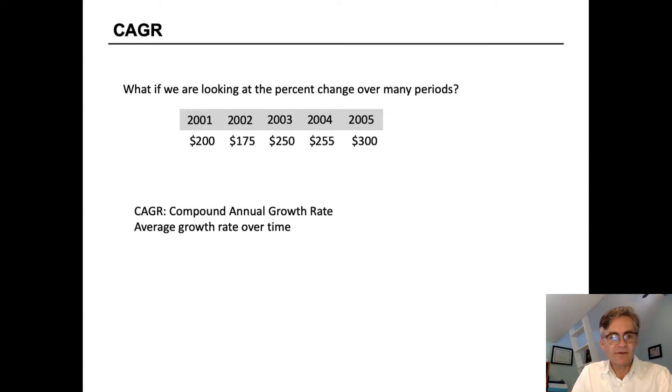We had $200,000 in 2001, and it grew to $300,000 in 2005. But we can see that it wasn't even growth. In fact, the first year from 01 to 02, it actually declined from 200 down to 175, but then it came back in 2003. It was fairly flat in 2004 and had another step up in growth in 2005.